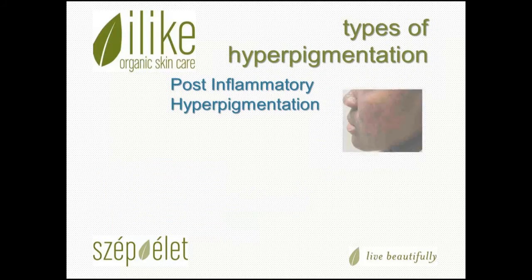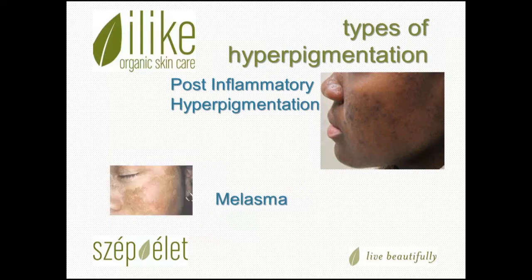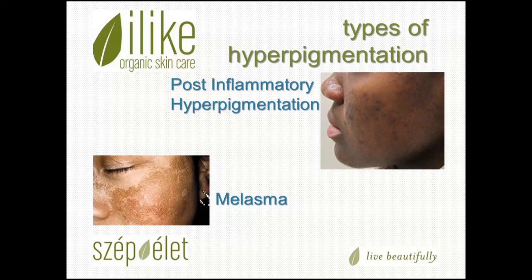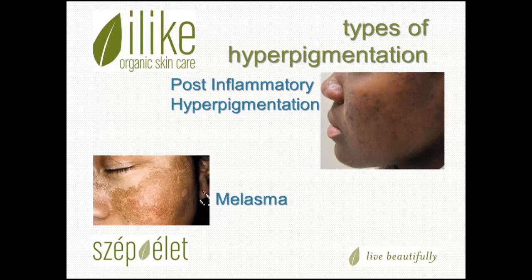Other types of hyperpigmentation include post-inflammatory hyperpigmentation, which is a discoloration due to inflammation caused by trauma to the skin — acne, cosmetic procedures, very deep chemical peels, overuse of certain ingredients, medical trauma, etc. This condition is most common in darker skin tones, as they tend to hyperpigment a little more easily than lighter skin tones.